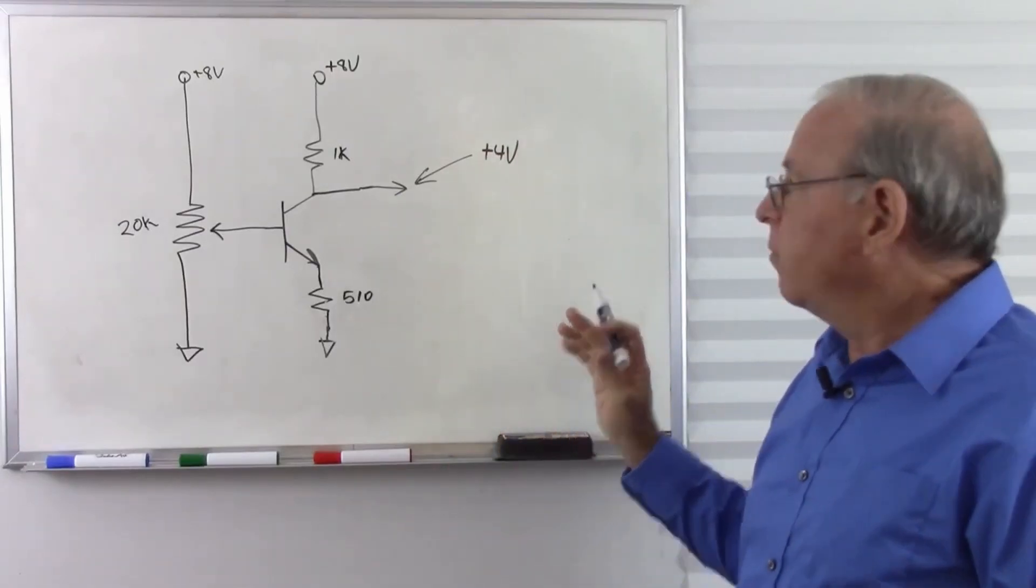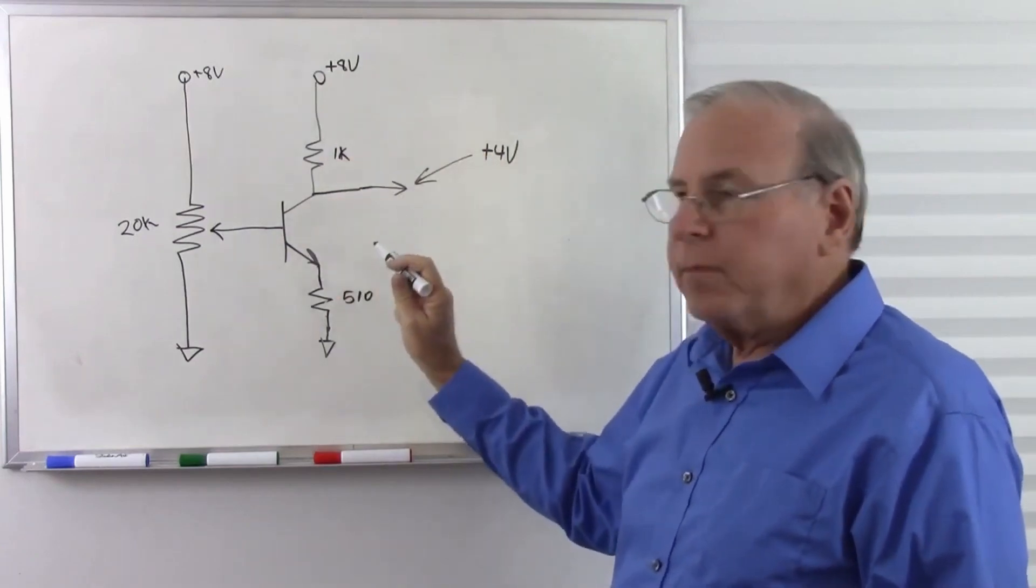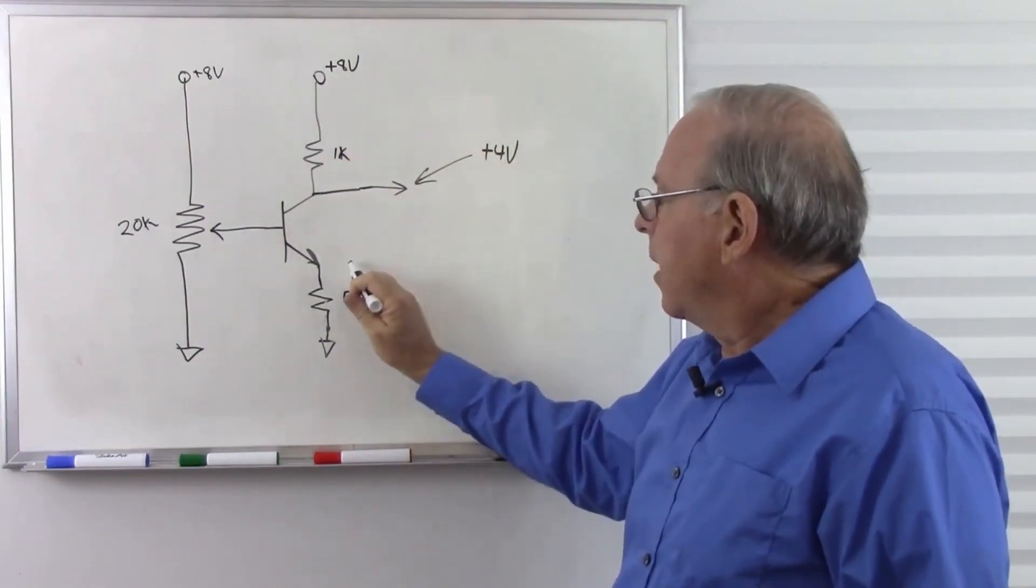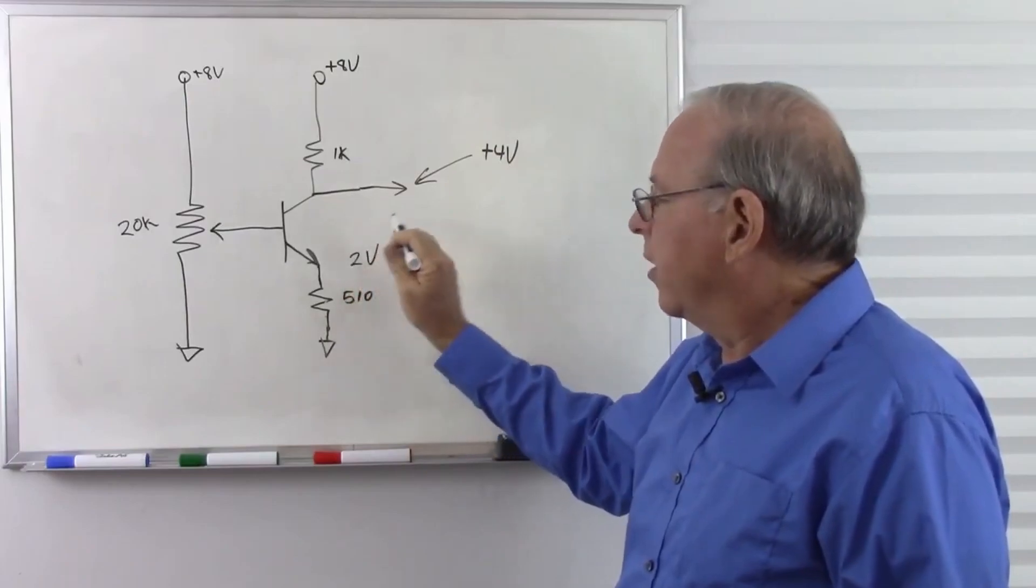Now let's take a look at what we've got. If we look at the rest of the circuit with the voltmeter, we would see that we probably have about 2 volts here.